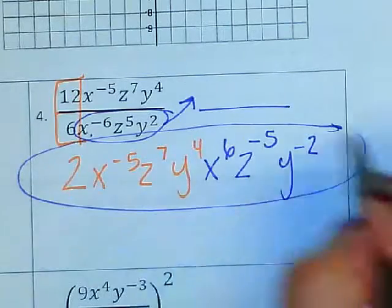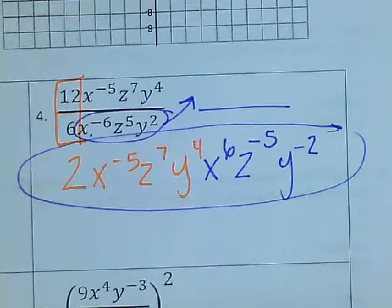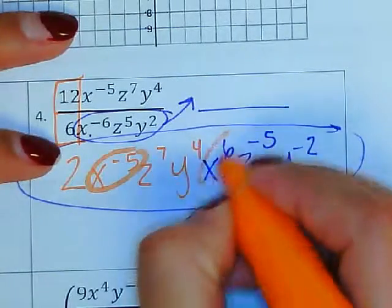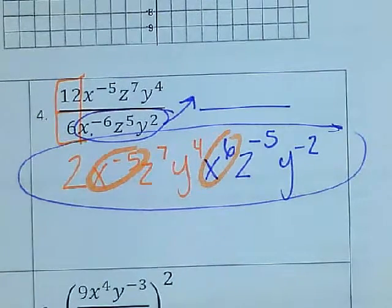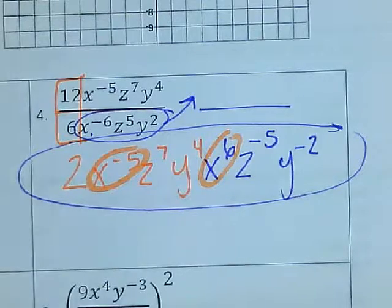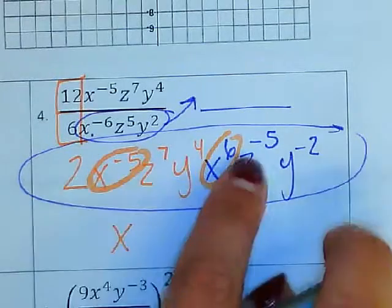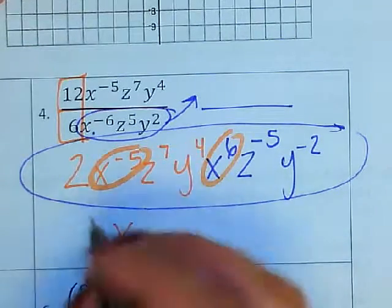So now they're all in the same line. So now I just have to simplify it by combining the letters. Whenever you're multiplying with the same base, you add the exponents. That was the shortcut. So here when I multiply x to the negative 5th times x to the 6th, I end up with x only, because negative 5 plus 6 is 1x.